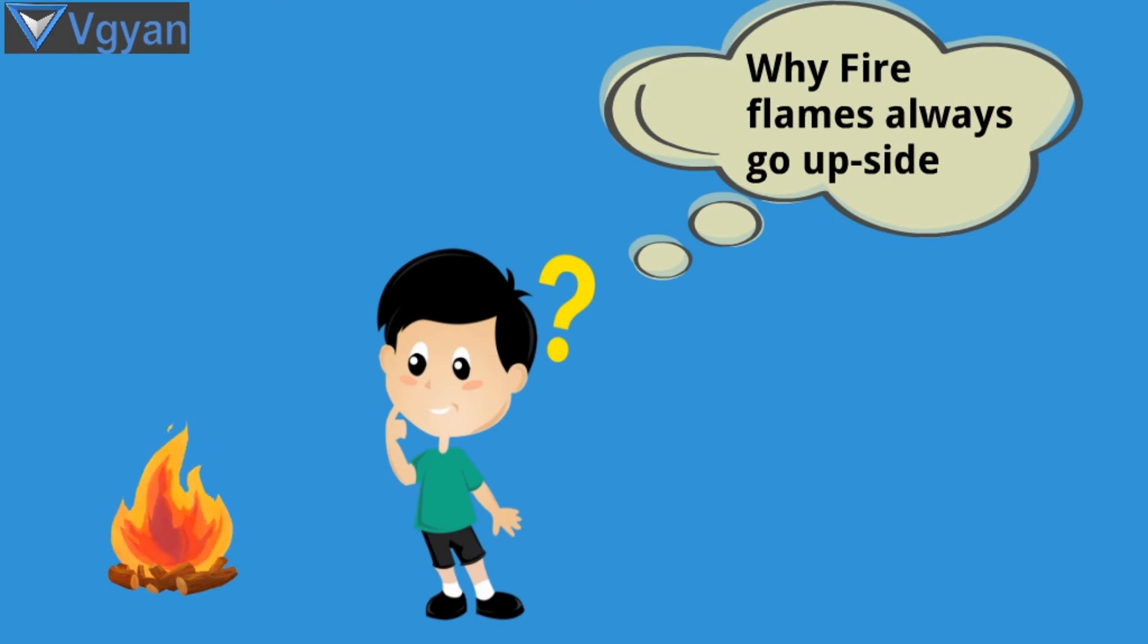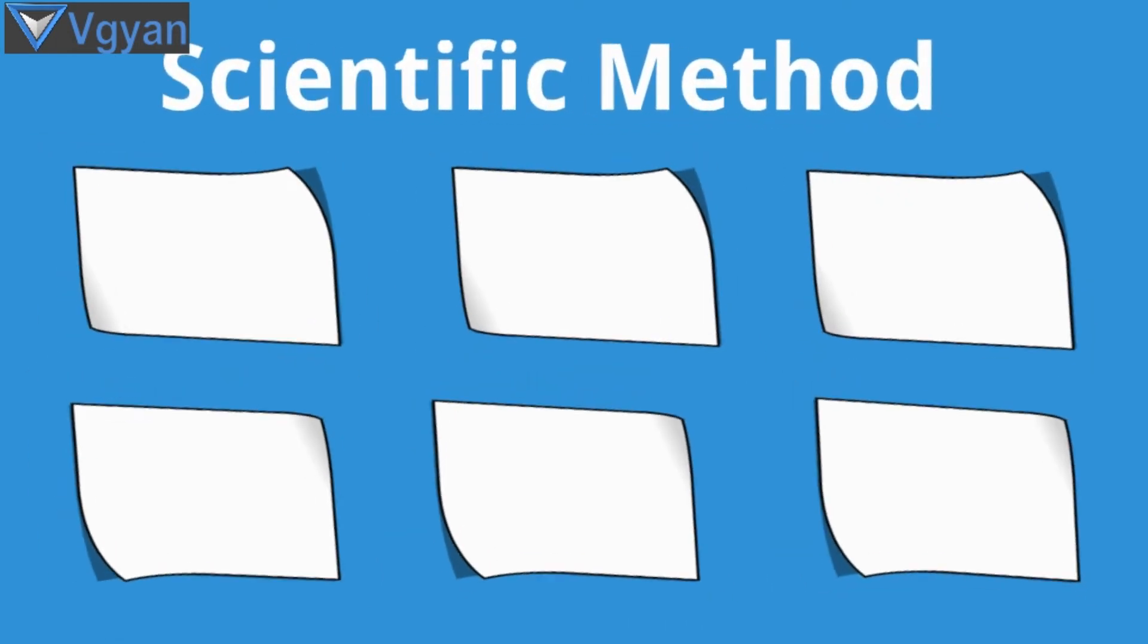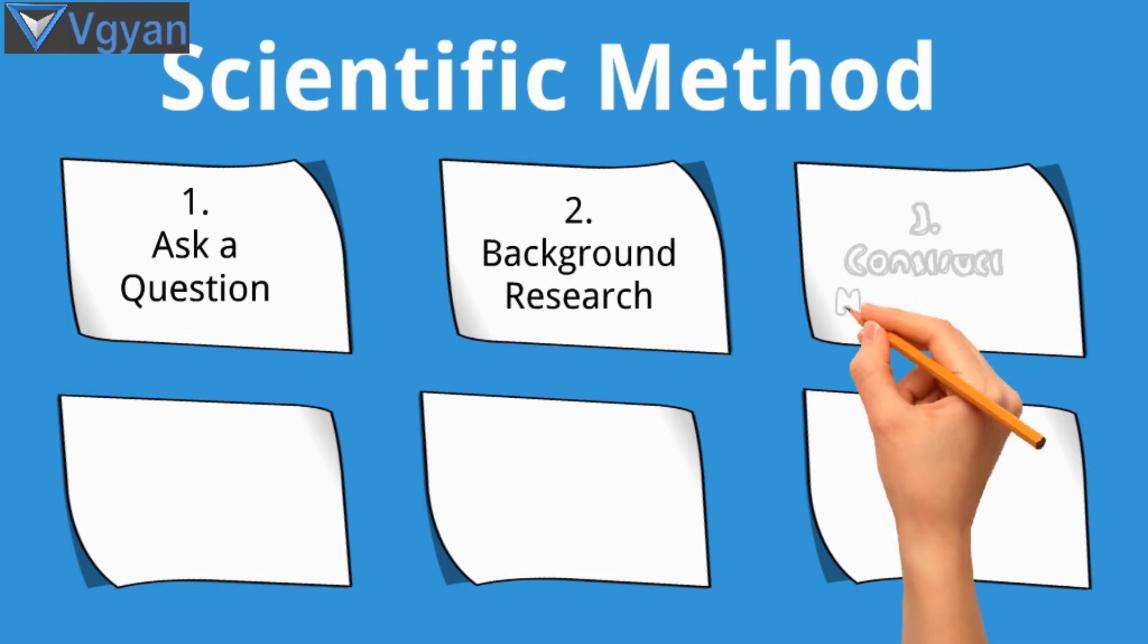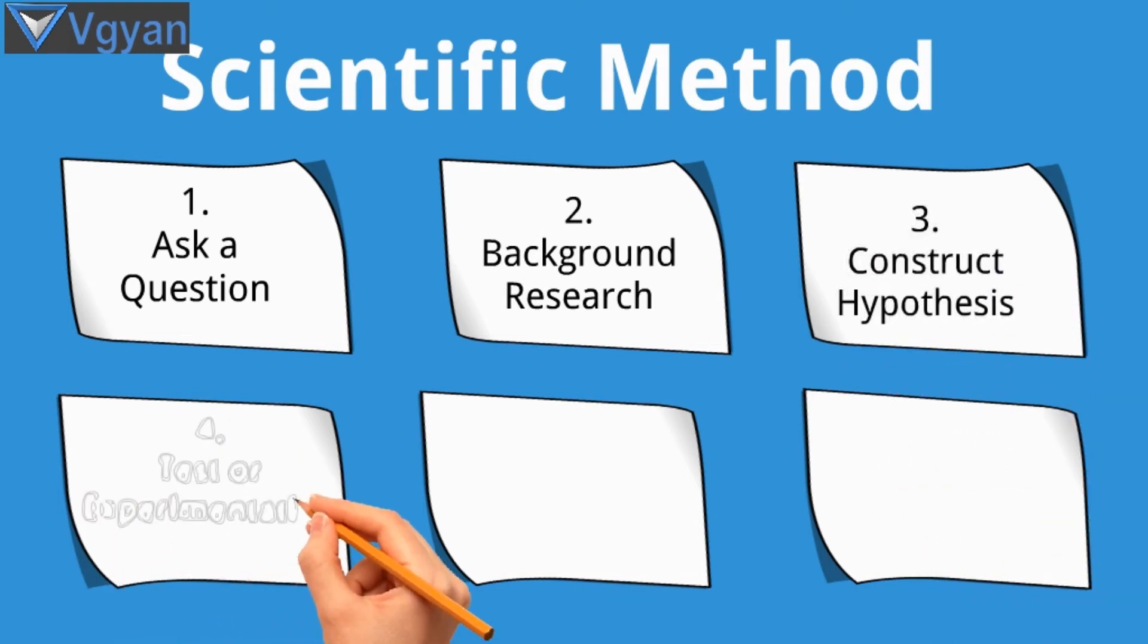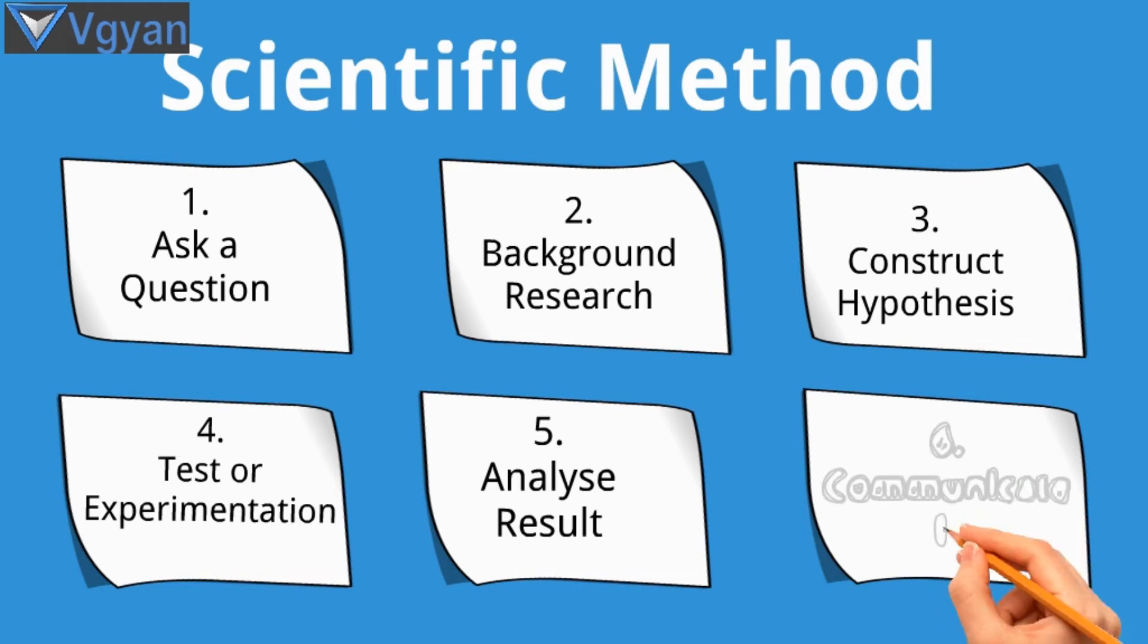Scientific method has six steps. The six steps are: first, ask a question; second, do background research; third, construct a hypothesis; fourth, test or experimentation; fifth, analyze your result; and sixth, communicate it.